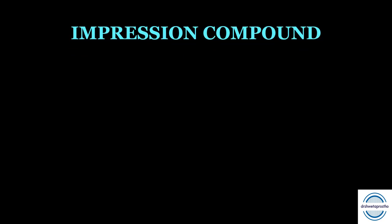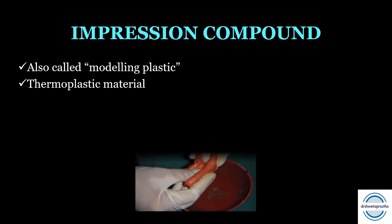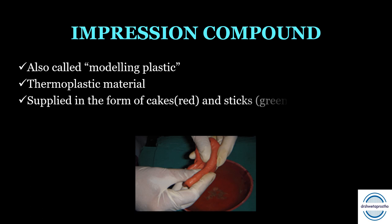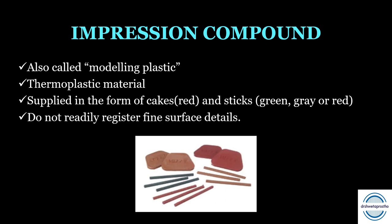Impression compound is also called modeling plastic. It is a thermoplastic material — moldable at a certain high temperature and solidifying upon cooling, which is why it is reversible. It is supplied in the form of cakes and sticks; sticks can be green, gray, or red depending on the fusion temperature. It does not readily register fine surface details because it is highly viscous and its flow is very less.